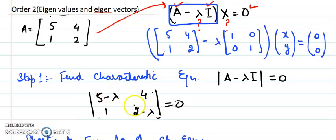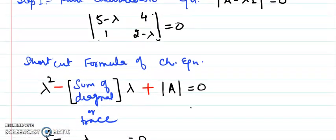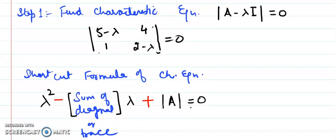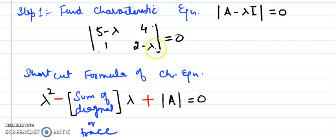Either you can open this determinant and find a quadratic expression of lambda or I would share with you the shortcut formula. What is the shortcut formula here? Shortcut formula for finding that, if you don't want to open and to solve, you can directly plug in the entry, you will get the characteristic equation. There is a lambda square minus, there is a minus sign and here you have some term which is the sum of the diagonal elements or you can say trace, that is a lambda coefficient and the third entry is a determinant.